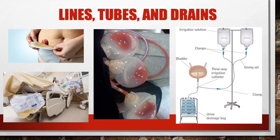There are also lines, tubes, and drains to assess for. This may include a urinary diversion such as a urostomy — an external pouch to collect urine instead of going through the urethra naturally. There are also Foley catheters, surgical drains from kidney procedures like JP drains, and depending on the procedure, some patients may require bladder irrigation.